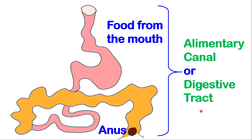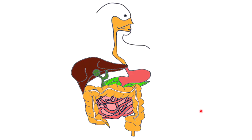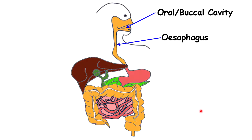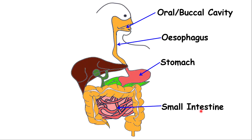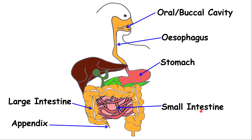Before we go through that, we are going to look at the structures involved in the alimentary canal. We have the oral or buccal cavity, which is the inside of the mouth. We have the esophagus, the stomach, the small intestine, the large intestine, the appendix, the rectum, and the anus.